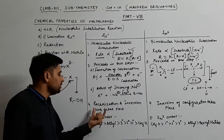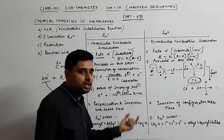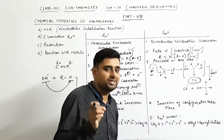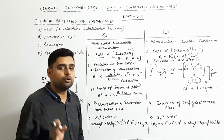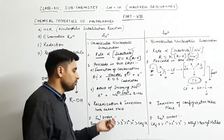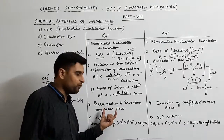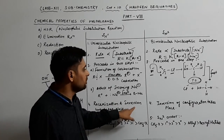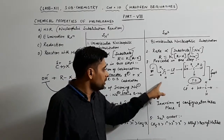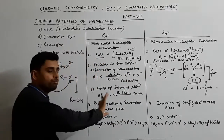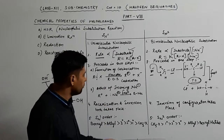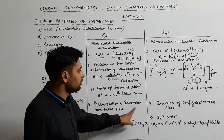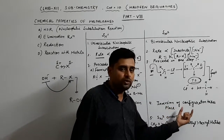In SN1 mechanism, both racemization and inversion of configuration take place. Racemization means both D (dextrorotatory, clockwise) and L (levorotatory, anticlockwise) mixtures are formed. In SN2 mechanism, because the nucleophile attacks from the backside — opposite to the leaving group — only inversion of configuration takes place.